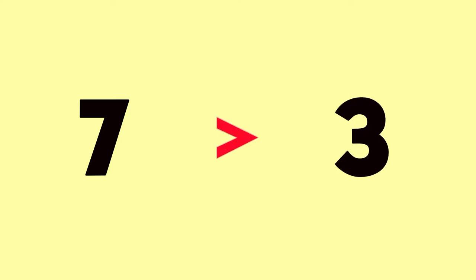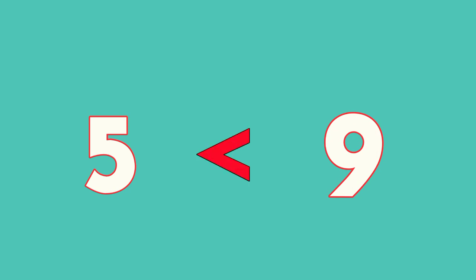Compare numbers 7 and 3. 7 is greater than 3, right? 5 and 9. 5 is less than 9.